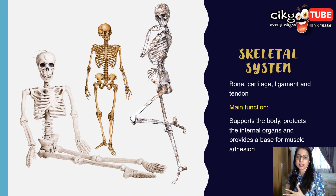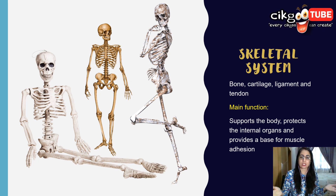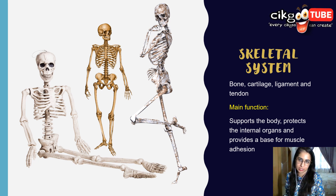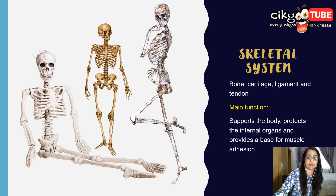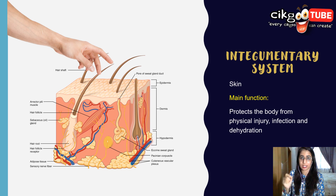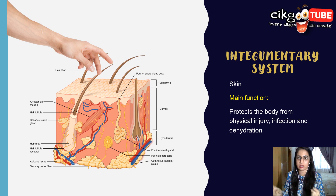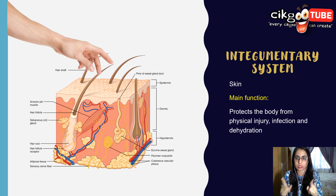The skeletal system, covered in Chapter 14, consists of bones, cartilage, ligaments, and tendons. It supports the body, protects internal organs, and provides the base for muscle attachment. Finally, the integumentary system — which is the skin, the largest organ in your body — protects the body from physical injury, infection, and dehydration.